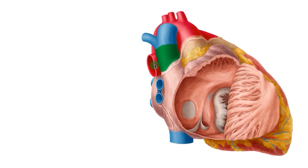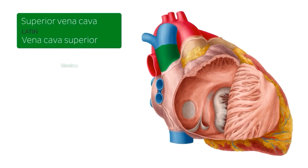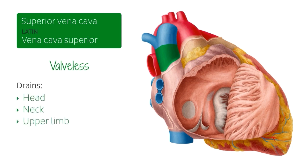The right pulmonary veins are visible around here. The superior vena cava, which we're here to talk about on this slide, is a large valveless venous vessel that drains the head, the neck, the upper limb, and the thorax. The superior vena cava is formed by the union of the brachiocephalic veins and opens into the right atrium of the heart, which we can see it doing just here.